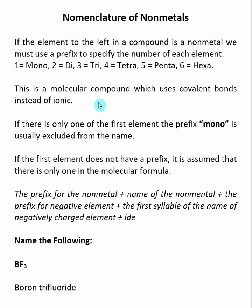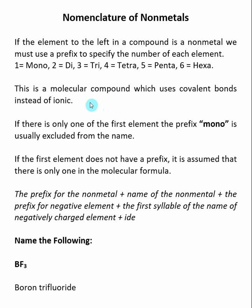In this case, when the non-metal is to the left in your molecular formula, you will be dealing with a molecular compound, which means that it uses covalent bonds to hold the atoms together instead of ionic. Because we're not dealing with ionic bonds, the elements will not have a defined charge, and so it's difficult to predict what the relative ratios of the elements will be, and that is why we're using prefixes.